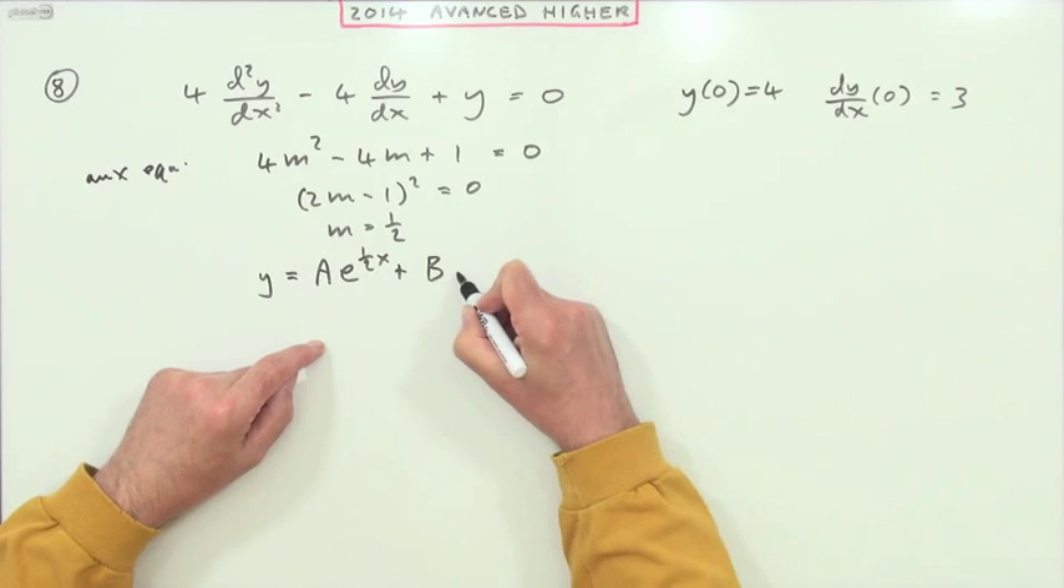So the solution for the complementary function, although in this case that's just the solution, would just be y = e^(x/2). But you require two solutions, so Ae^(x/2) + Bxe^(x/2) form a pair of solutions to that.